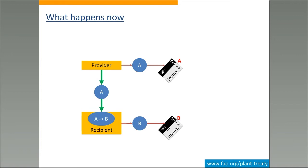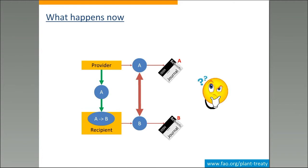Let's assume that the recipient also does some scientific research on this material and publishes the result. What the recipient does, of course, is cite his own identifier B in the publication. The problem is that the relation between A and B is known to nobody — at most it is available to the recipient. Somewhere in the system it may be written that B is actually coming from A. So the issue is that somebody from outside has no way of understanding that the results published under B can also be applied to the results published for A.